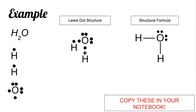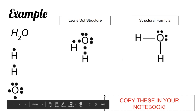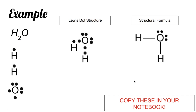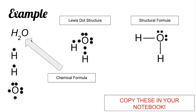One pair of shared electrons is represented by one line. The next formula is your chemical formula, which shows us the number of atoms in your chemical compound. So the Lewis dot structure shows the electrons, the structural formula substitutes lines for shared pairs of electrons, and the chemical formula shows the number of atoms in your compound.